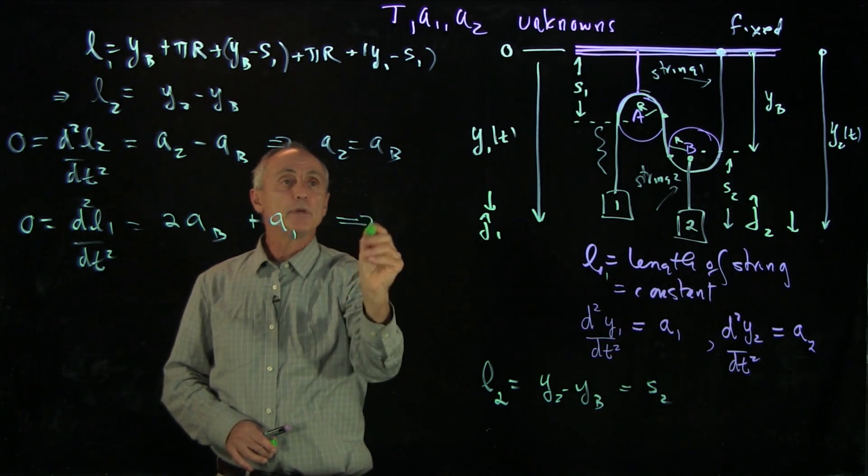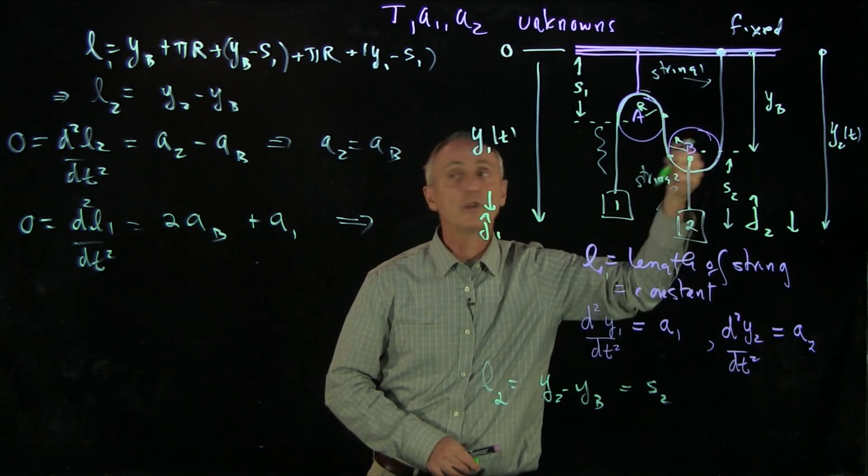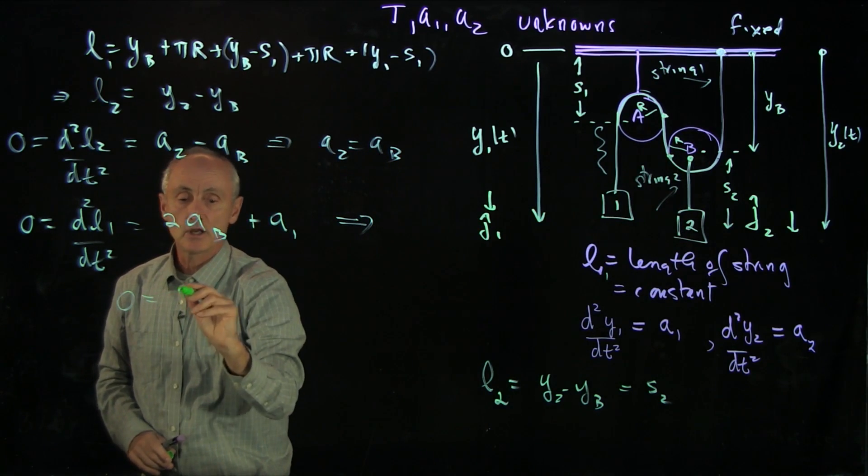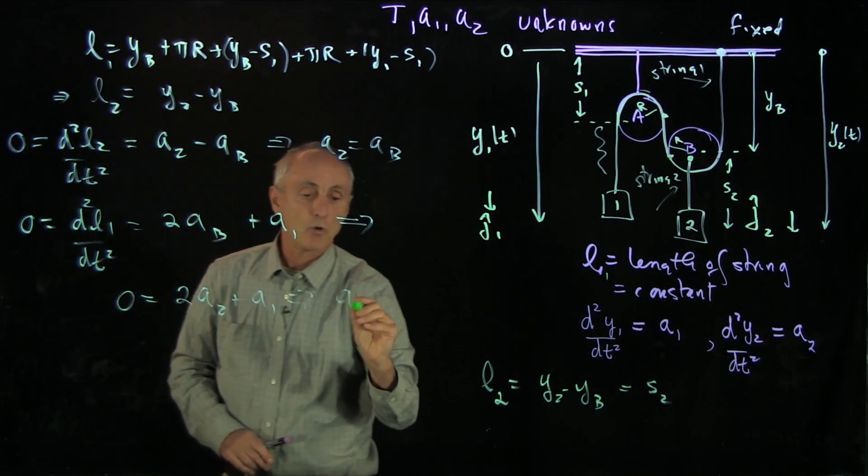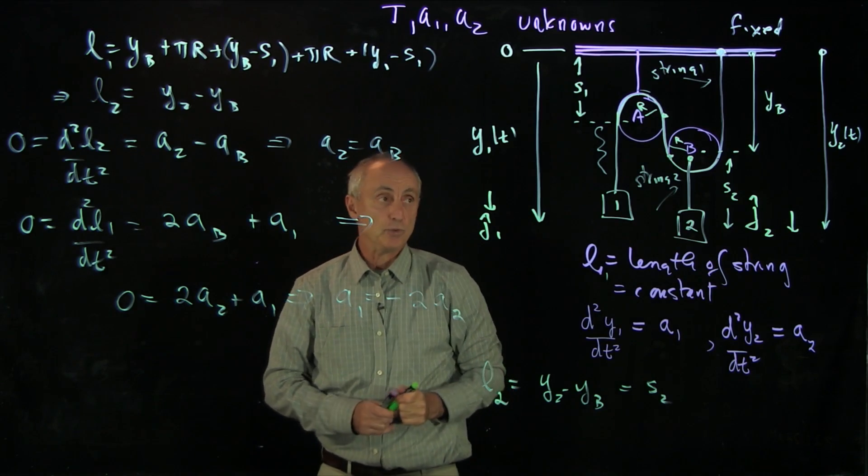And now, because the block and 2 and pulley b are accelerating together, we have our condition, which is 2a2 plus a1 is 0, or that a1 is equal to minus 2a2. And that is the extra constraint condition that will enable us to solve the system of equations.